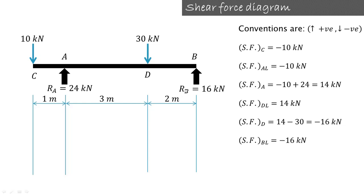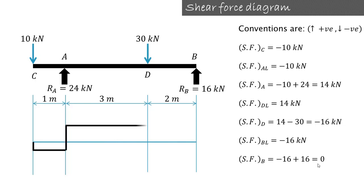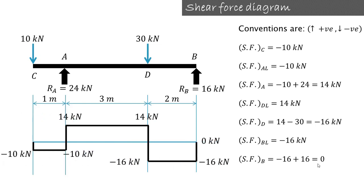Just to the left of B, with no other force acting between D and B, the shear force remains minus 16 kilonewton. Exactly at B there is an upward reaction of 16 kilonewton, so minus 16 plus 16 equals 0. Using these calculated values — minus 10 at C and A-left, 14 at A and D-left, minus 16 at D through B-left, and 0 at B — we can draw the shear force diagram.